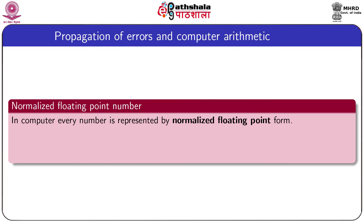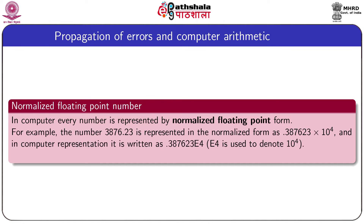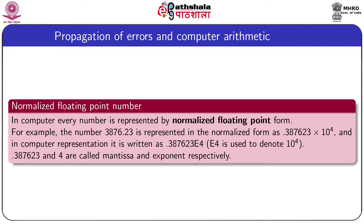Now consider the normalized floating point number, a very important concept in computer arithmetic. Every number is converted to a proper fraction where the first nonzero digit appears after the decimal point, and the whole number is multiplied by a power of 10. For example, 3876.23 is converted to 0.387623 × 10⁴. The number 0.387623 is called the mantissa and 4 is the exponent. In computer representation, this is written as 0.387623 e4.